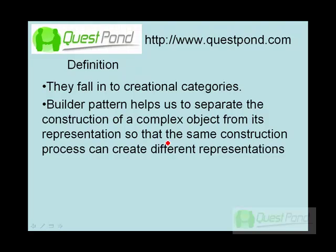For instance, you can have two types of invoice objects — one is an invoice object with taxes and one is an invoice object without taxes. The construction process for both these invoice objects is complex. You want the construction process for building an invoice with tax and without tax to be separated from the representations. At that moment, you will need Builder Patterns.